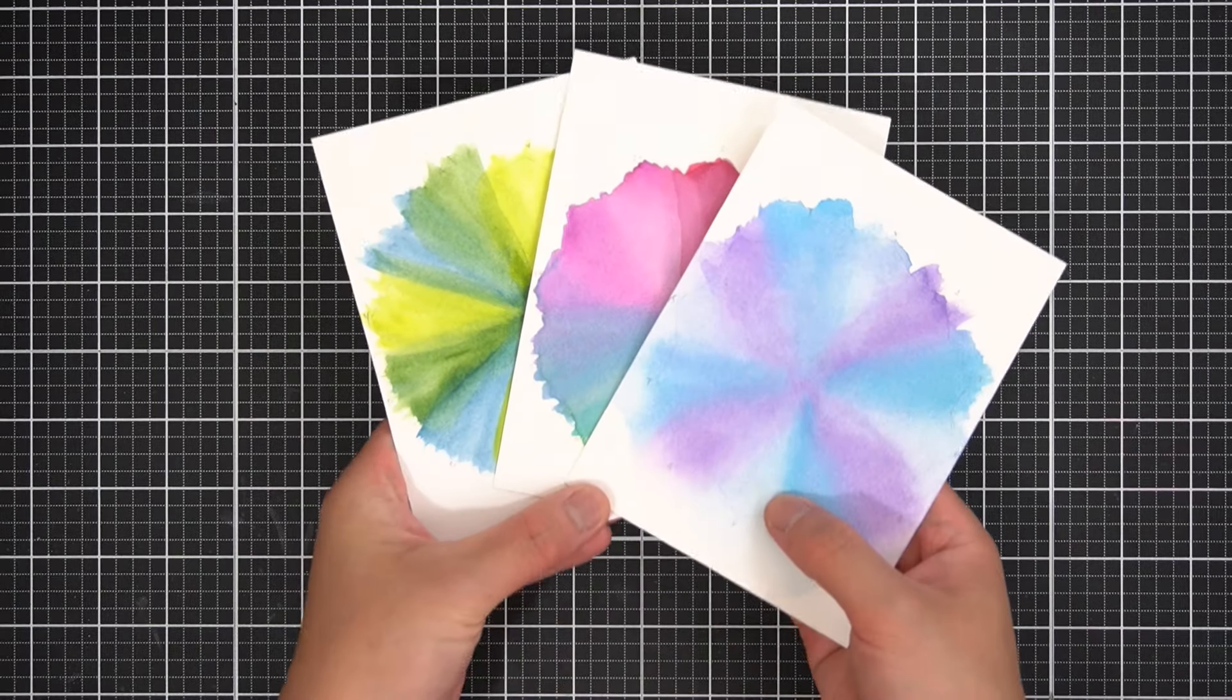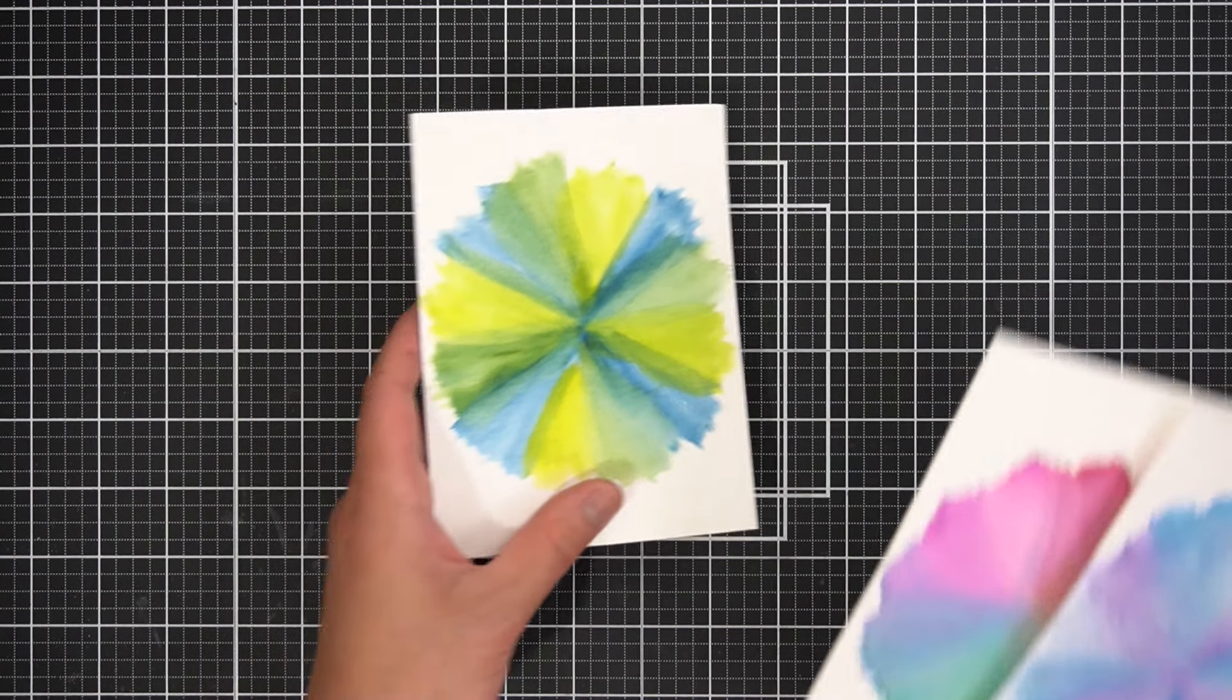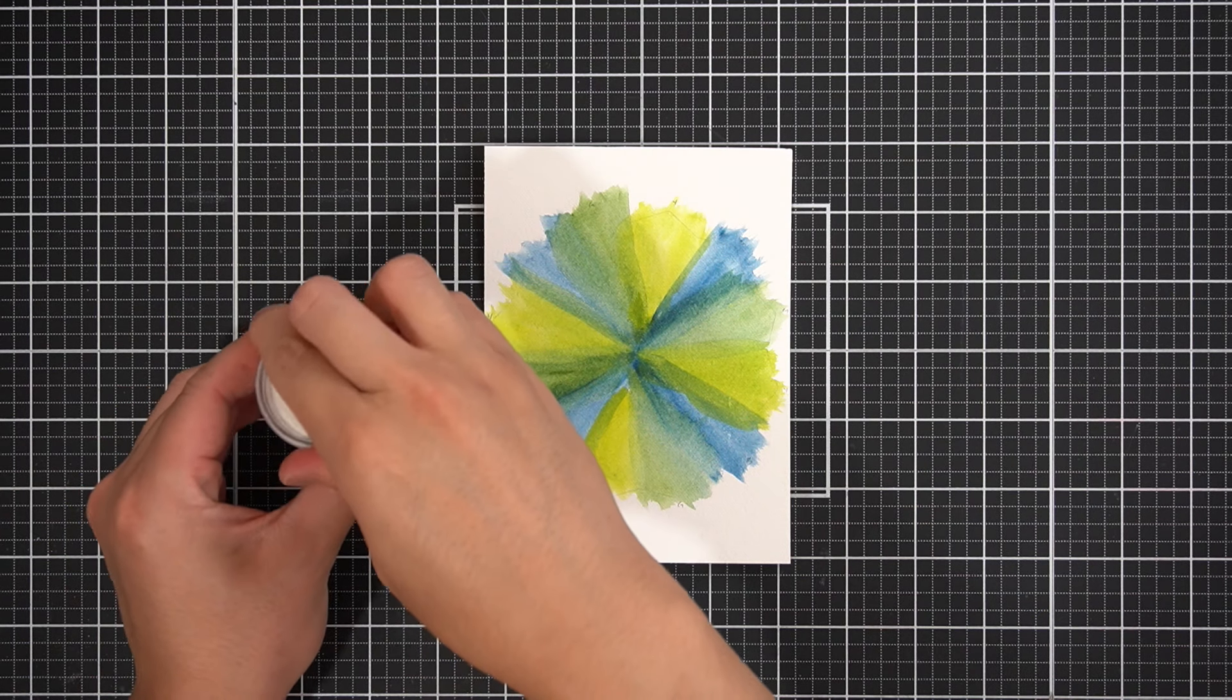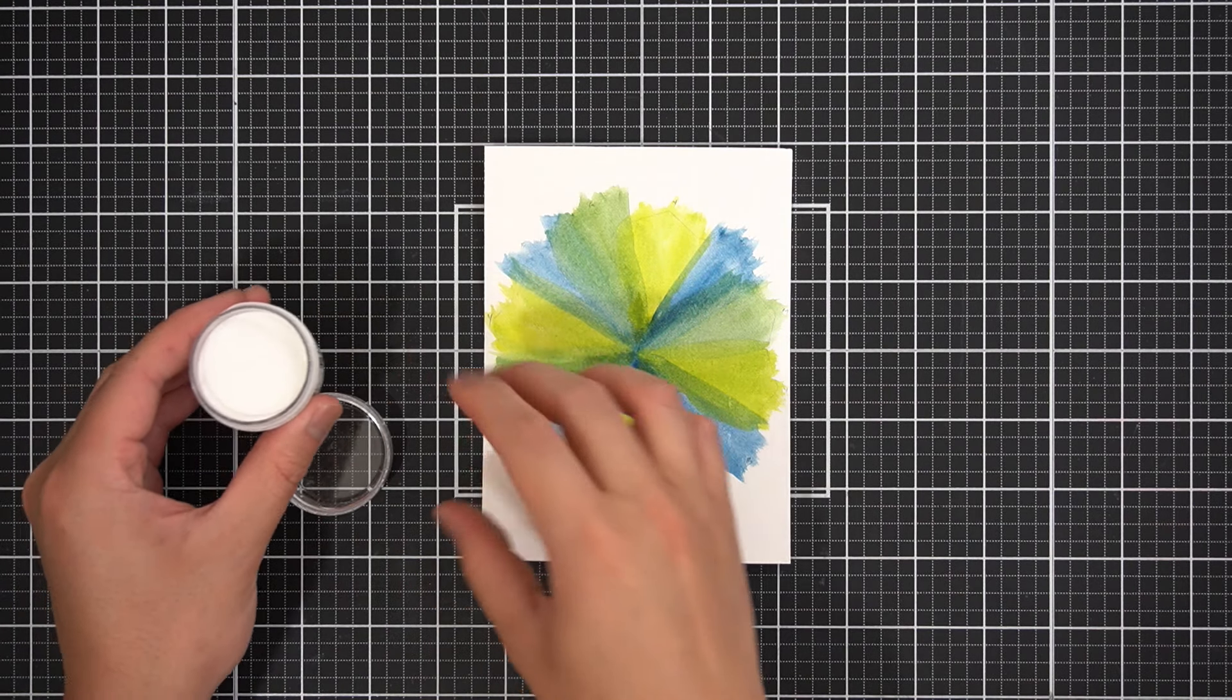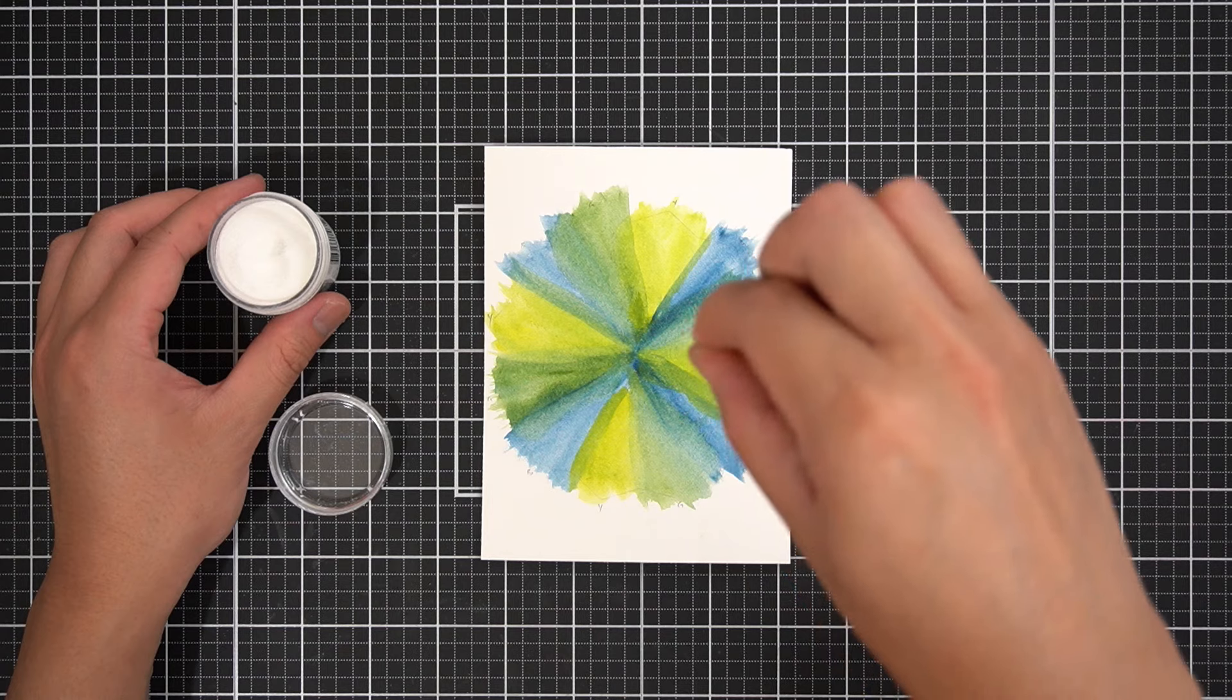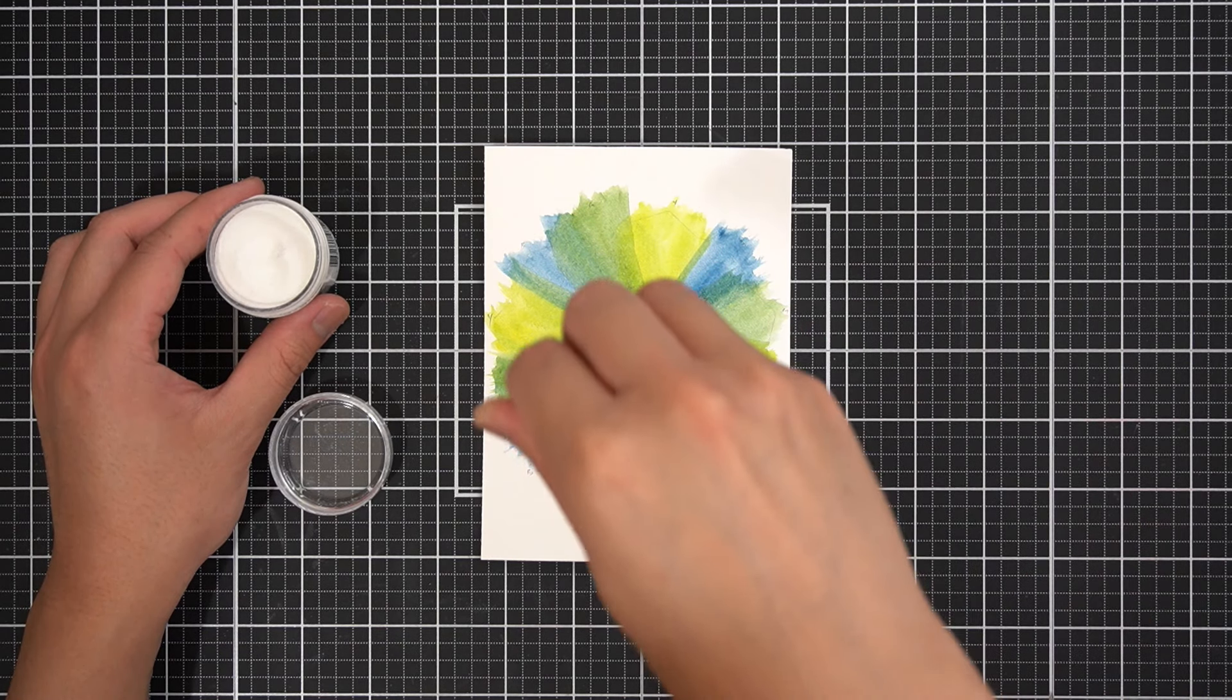So back to my now dry watercolor panels, I'll do something a little extra to this green blue yellow tie-dye panel. This is Ranger Sticky Embossing Powder. When heated up with a heat tool or in my case a laminating machine, this embossing type powder will get tacky. I'll use this tackiness to adhere some heat transfer foil to this watercolor panel before die cutting.